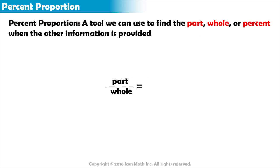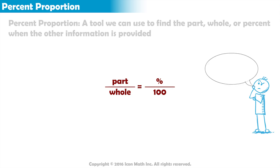Part over whole equals percent over 100. Let's use the Percent Proportion to answer the question: what is 40% of 30?